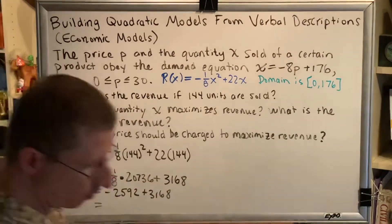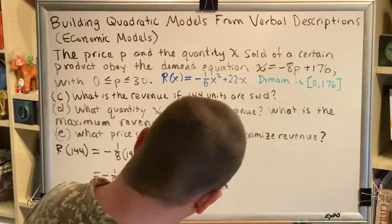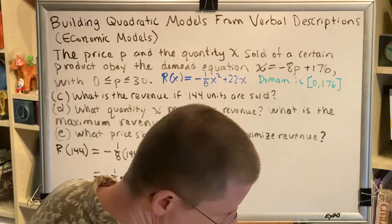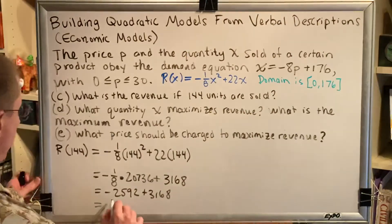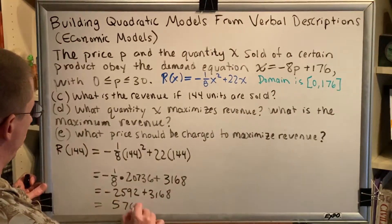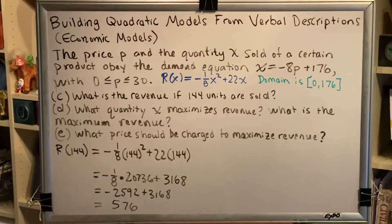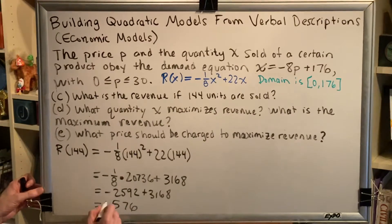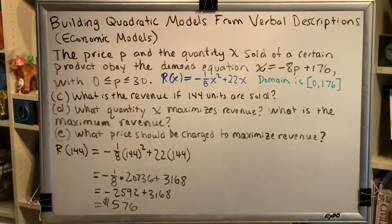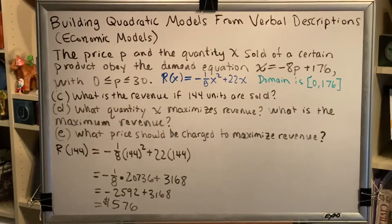And then add those together. 576. Now 576 what? Well, this is our revenue. So this is 576 dollars. So when 144 units are sold, the revenue is 576 dollars.